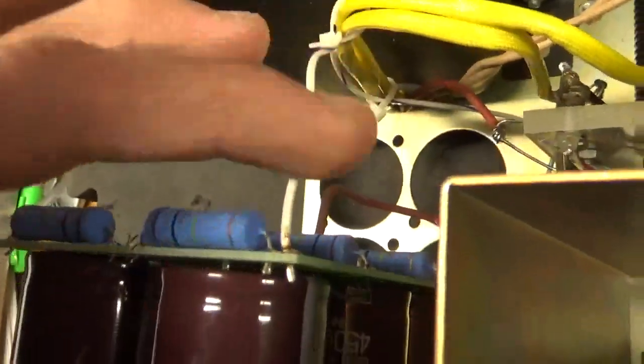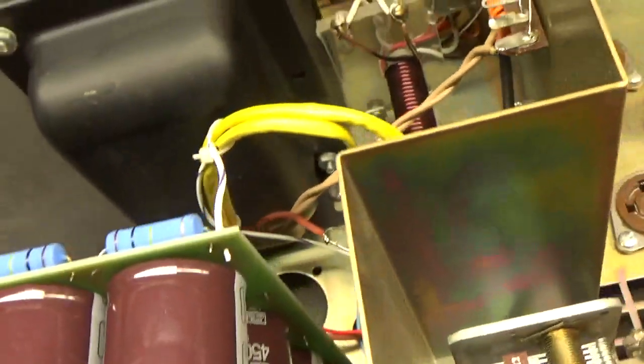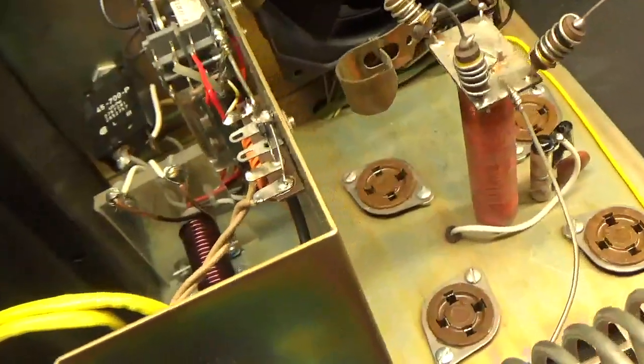Replaced the B-negative wire with some Teflon wire with silver-plated, stranded center conductor. Replaced the B-positive wire going from the caps over to the plate choke with the proper wire.